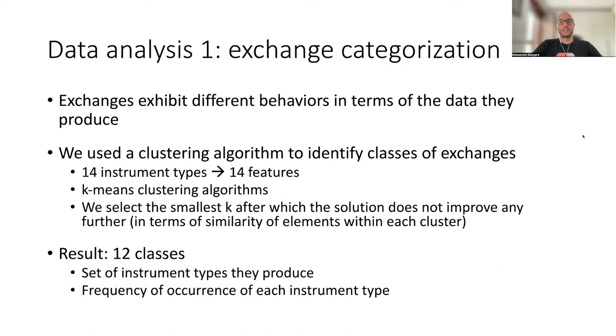So for the analysis of the data sets, we derive four key aspects for our model. First, exchange categorization. Exchanges are the sources of data. So one or more exchanges publish into a market data feed, which is analogous to an event stream. So exchanges are the sources of data that publish through streams or feeds. We immediately noticed that exchanges exhibit very different behaviors in terms of the data they produce and in particular, in terms of the instrument types they publish.